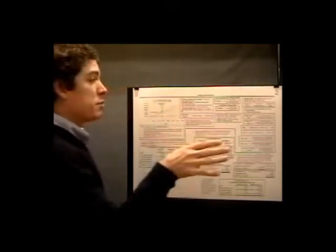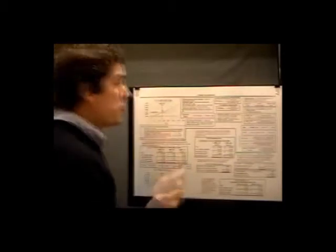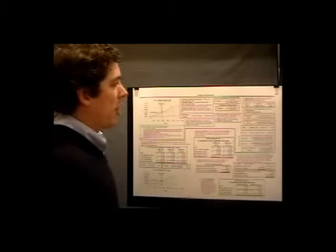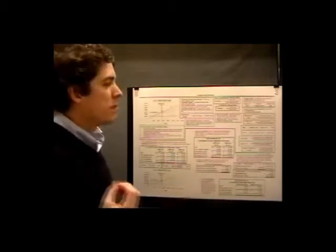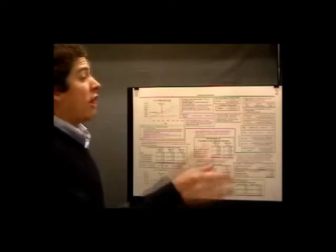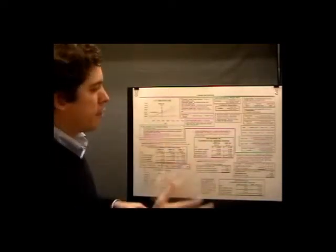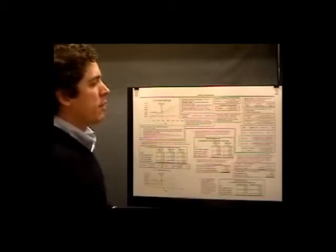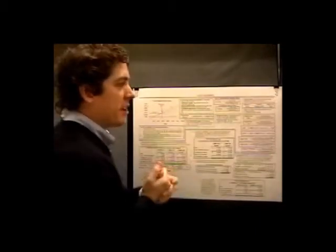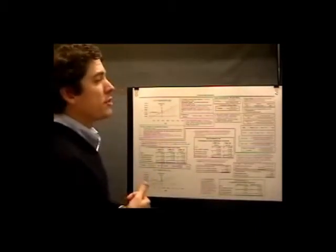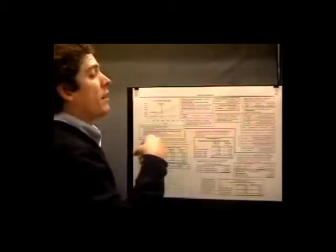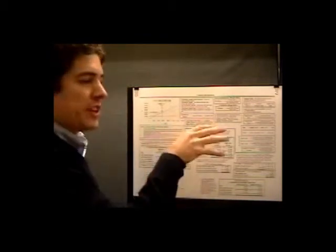The contribution margin income statement categorizes costs as variable or fixed. There's a contribution margin — that's the difference between sales revenue and variable cost. There's a unit contribution, which demonstrates how much each additional unit contributes to fixed costs and profit. And there's a contribution margin ratio, that demonstrates how much additional contribution margin is generated by each dollar of sale. Contribution margin equals sales minus variable cost. Contribution margin ratio equals unit contribution margin divided by unit selling price, or total contribution margin divided by total sales — we can do it on a unit basis or total sales basis.